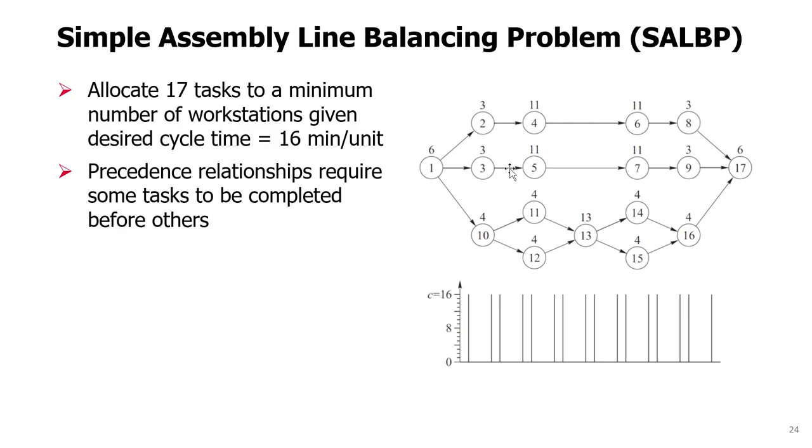For example, with task 11 and task 5, we can do either of them first or second. But task 11 and task 10 are dependent - task 10 has to be finished before 11. Notice they can be actually done on the same station, but they can also be done on different stations, as long as 10 is on an earlier station than 11.